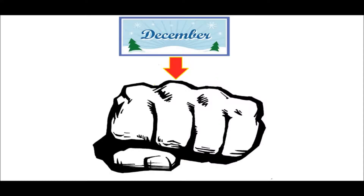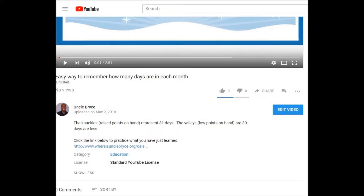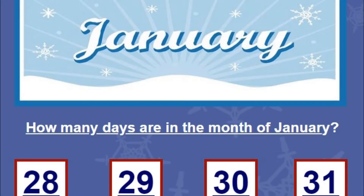And finishing up on a knuckle, which is 31 days, we have December — and now we're all out of months. For more practice, click the link in the information area below the video. Hope that helps. Take care and thanks.